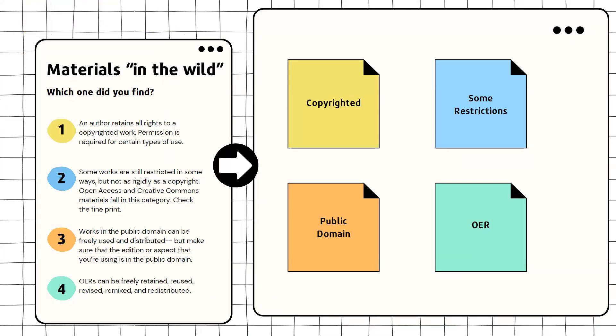If you look for educational resources online they are probably going to fall into four categories. Most things are going to be copyrighted. Some things will have usage guidelines and restrictions. Some things will be in the public domain and some will be true open educational resources. We all know what a copyright is. Your options with copyright are to obtain permission to use the item, to purchase it, or to determine what portion might be covered by fair use.